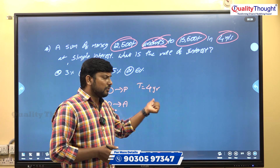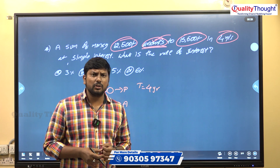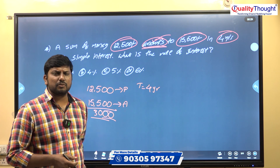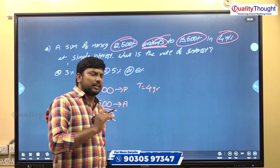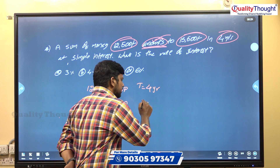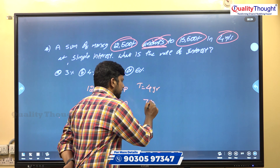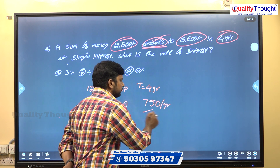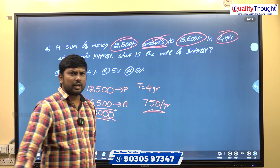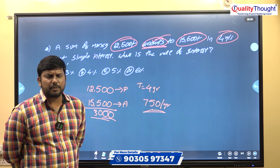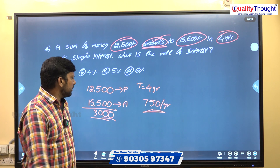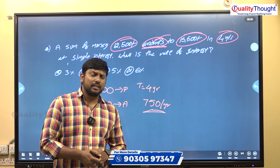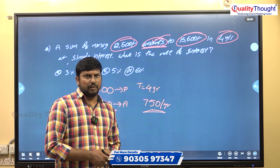That 3,000 rupees increase happened over 4 years. So per year the interest is 3,000 ÷ 4 = 750 rupees per year. Now, for 12,500 rupees, what is 10%? That would be 1,250.